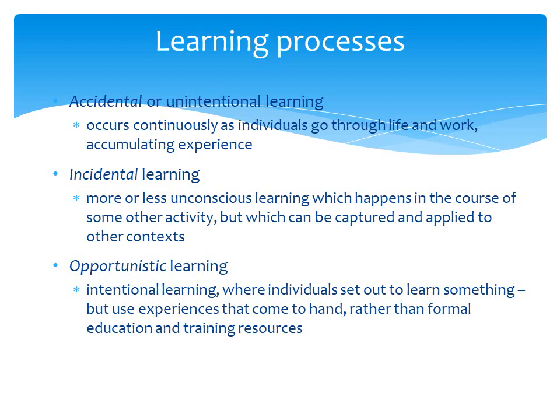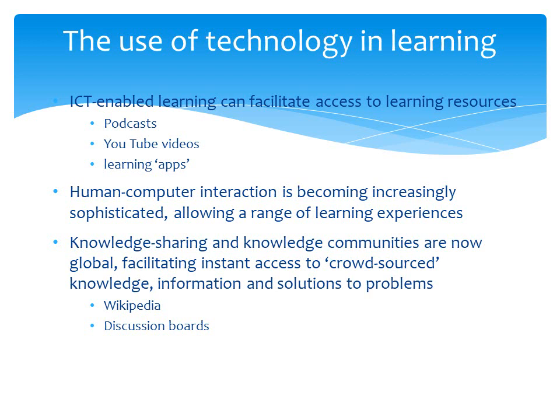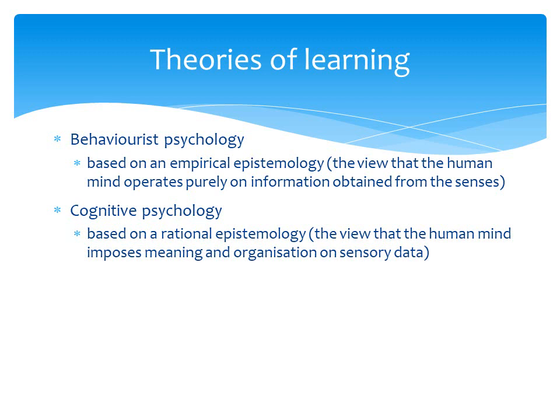Incidental learning is more unconscious, happening in the course of some other activity but can be captured and applied to other contexts. Opportunistic learning is where you deliberately go out to find out about things but aren't necessarily in formal education — such as researching a topic independently. Technology — podcasts, YouTube, Wikipedia, discussion boards — can obviously assist in learning.